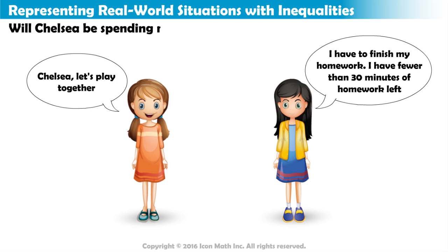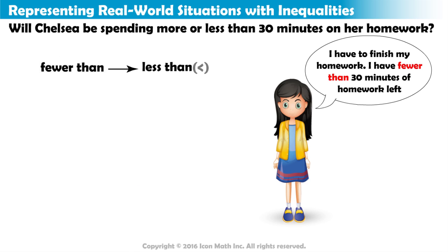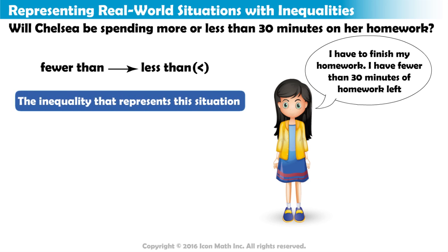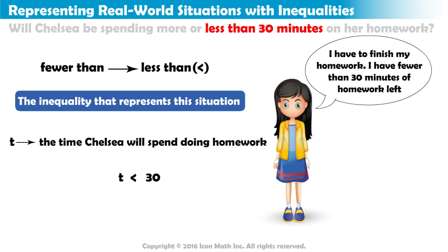Will Chelsea be spending more or less than 30 minutes on her homework? Fewer than means less than, so Chelsea has less than 30 minutes of homework. Can you write an inequality to represent this situation? If T stands for the time Chelsea will spend doing homework, then T is less than 30 represents that the amount of time will be less than 30 minutes.